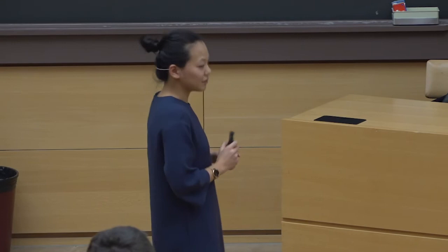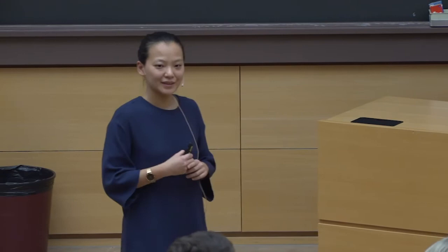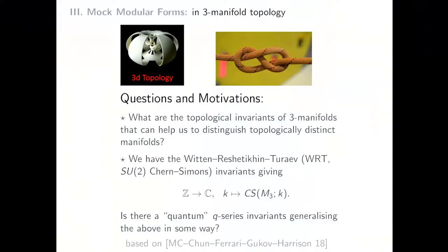If you're not tired of my stories yet, I'll tell you about another beautiful and unexpected way in which modular forms show up. The question is about three-dimensional topology. In two dimensions it's easy — you look at the genus and you're sort of done — but in three dimensions, the question is: what are the topological invariants of three-manifolds that can help us distinguish topologically distinct manifolds? This question is also closely related to knot theory.